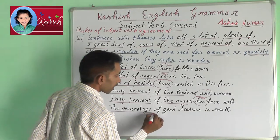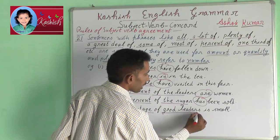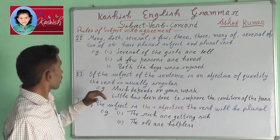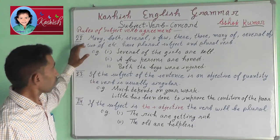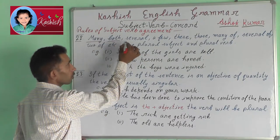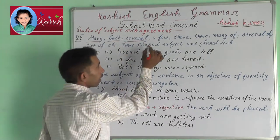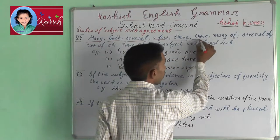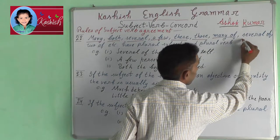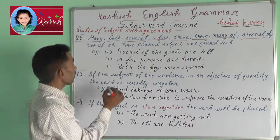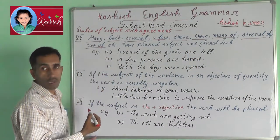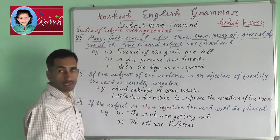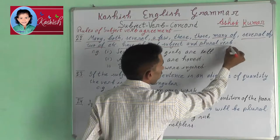The percentage of good leaders is small. Rule 22. Many, both, several, a few, these, those, many of, several of, two of, etc. have plural subjects and take plural verbs.